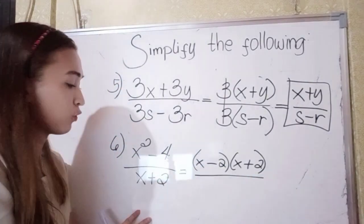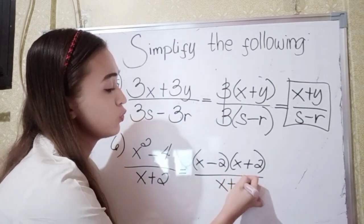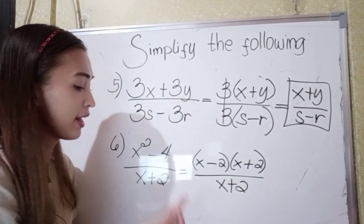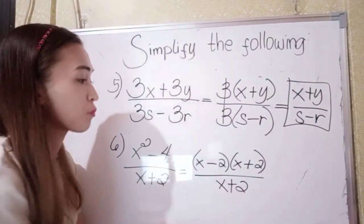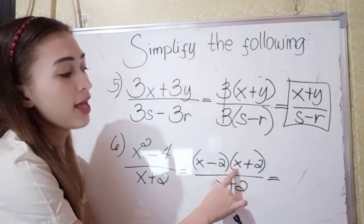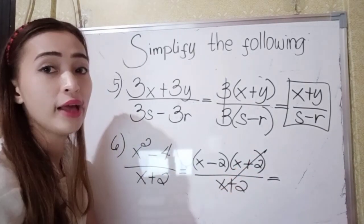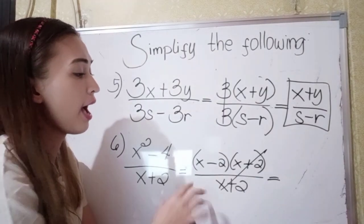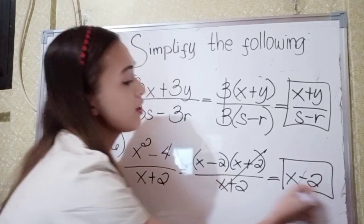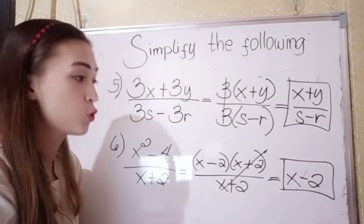In our denominator, just copy x plus 2, since we cannot factor x plus 2 further. Since x plus 2 is the same with x plus 2, that is 1, so cancel. We have here the answer x minus 2. So the answer in number 6 is x minus 2.